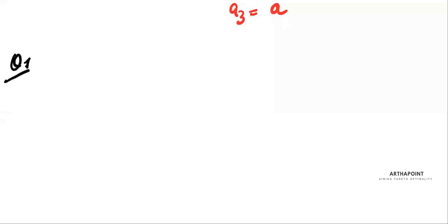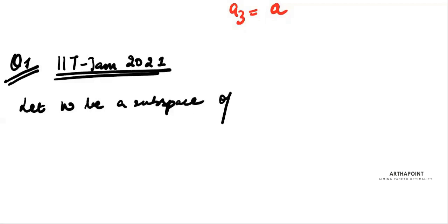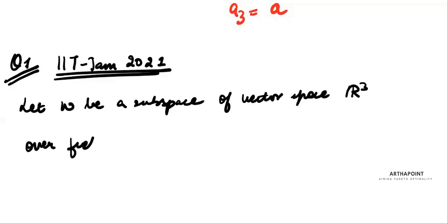Consider this last question. This is a question that came in the IIT JAM 2021 exam. The question says the following: Let W be a subspace of vector space R³ over a field R, spanned by...